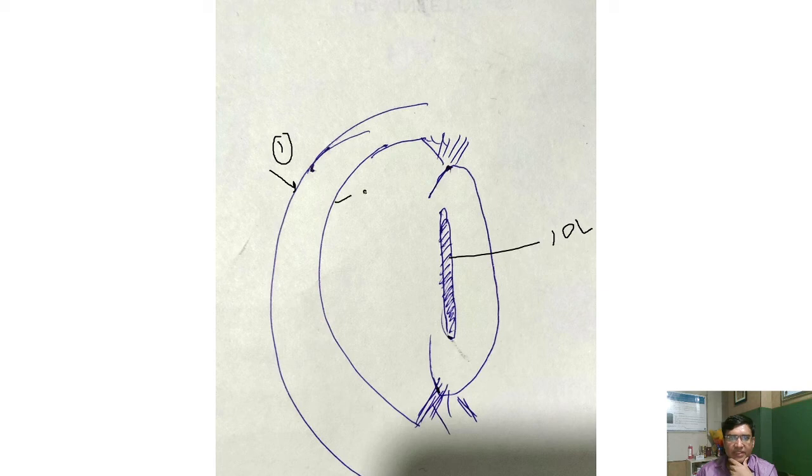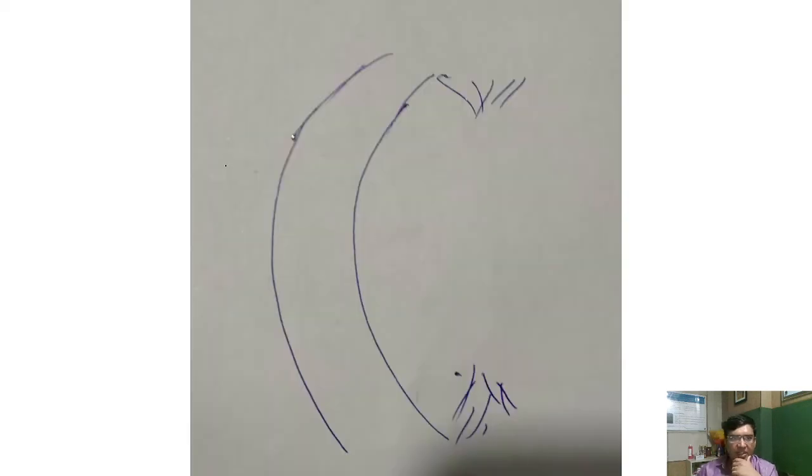The posterior IOL surface forms type 4, so all four images would be present. But if the patient is aphakic, meaning the lens has been removed, only the cornea is there.